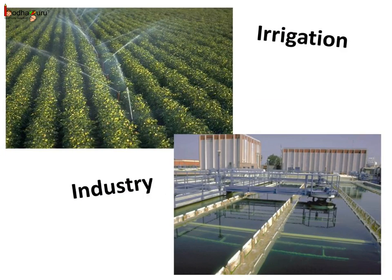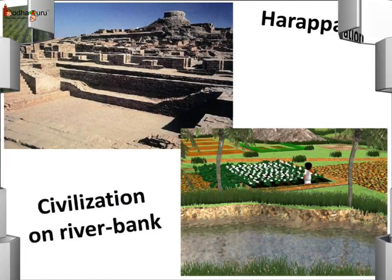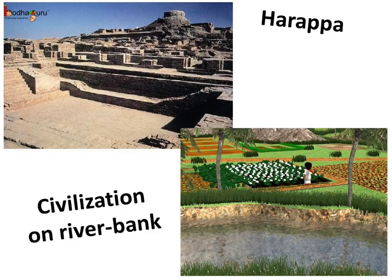Human civilization cannot grow without water, as we not only need water for our daily needs, but also for cultivation of crops and industry. This is the reason why many ancient civilizations flourished on the banks of rivers, like Harappa, Mohenjo-daro, and the Egyptian civilization, as people used river water for irrigation. So, no water means no food.